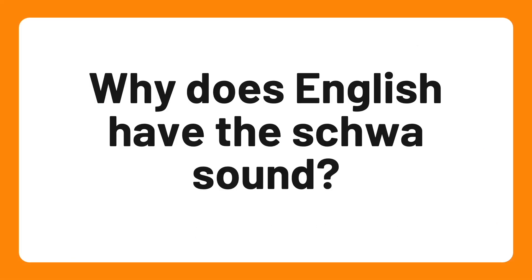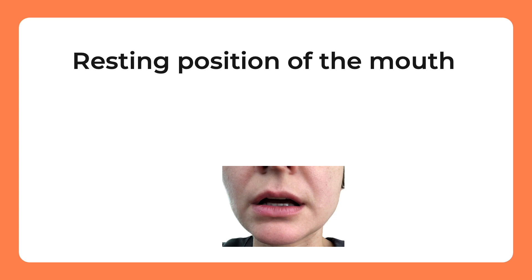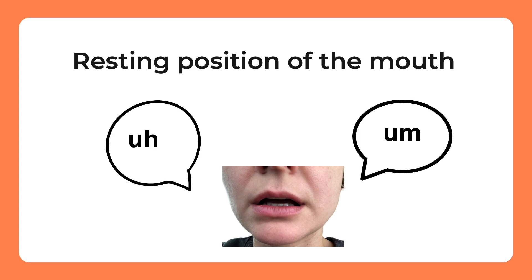Why does English have the schwa sound? In a nutshell, the schwa sound is the resting position of the mouth for English speakers. For instance, it is the sound that comes out of our mouth when we are thinking and don't know what to say — 'um', 'uh'. In English, we sometimes replace the common sound of vowels with the schwa sound.